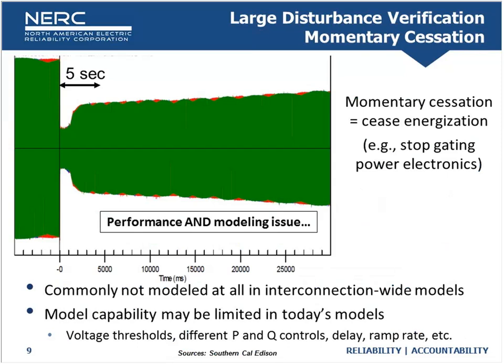What we're seeing is that a lot of times the plant response does not match the model. It doesn't necessarily mean it's a modeling deficiency — it may just be a communication deficiency in understanding how these plants are actually behaving. Momentary cessation is one issue that kind of hit us quite literally. We've had a number of grid disturbances where we're seeing the use of momentary cessation — the ceasing of energization of current into the grid by these types of resources, particularly in the solar world.